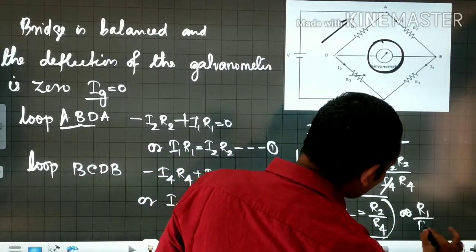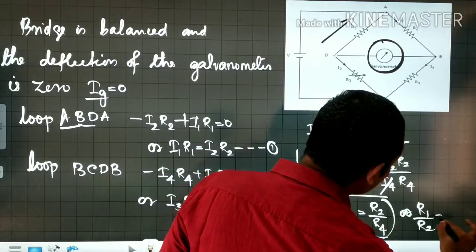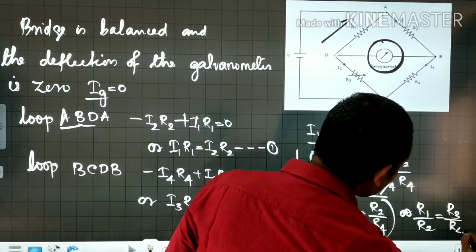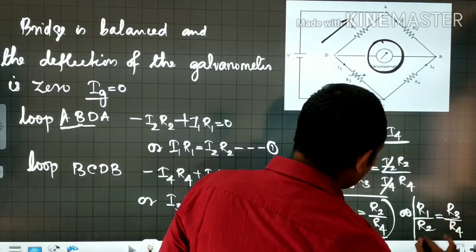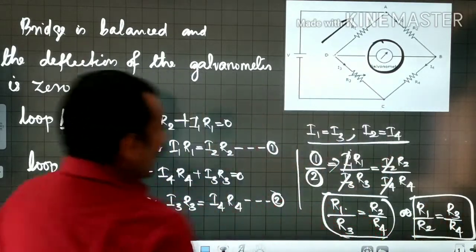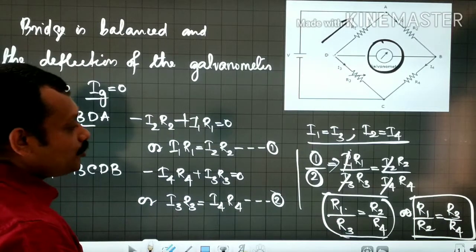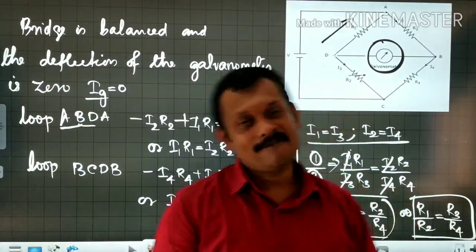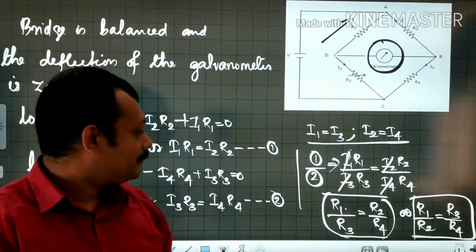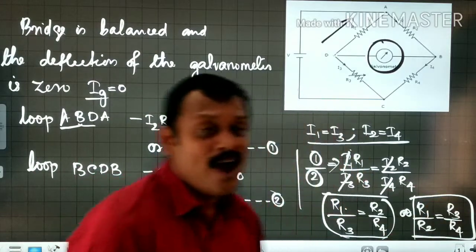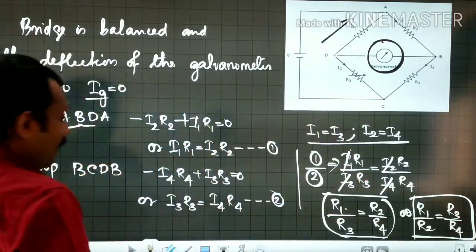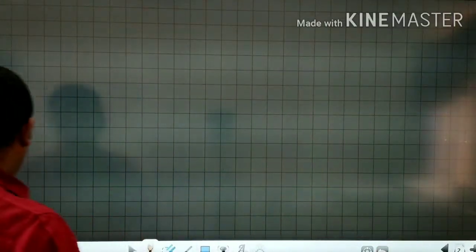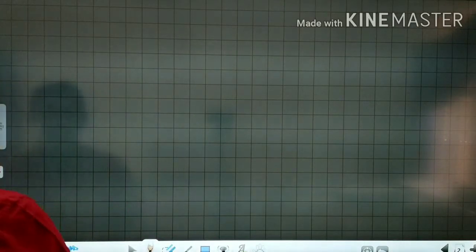This gives us R1 by R2 is equal to R3 by R4. R1 by R2 is equal to R3 divided by R4. This is the answer.